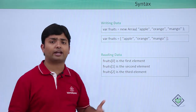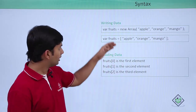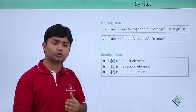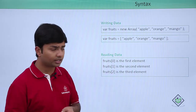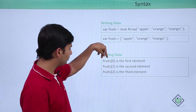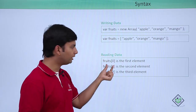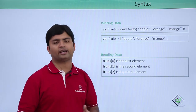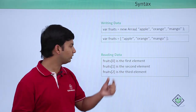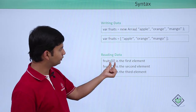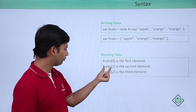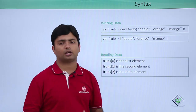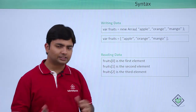Both are valid syntaxes in JavaScript. Once you have defined the array and want to retrieve elements individually, you use the array name followed by square brackets with the index. As mentioned, the index starts at zero, so `fruits[0]` gives you apple, `fruits[1]` gives you orange, and `fruits[2]` gives you mango.